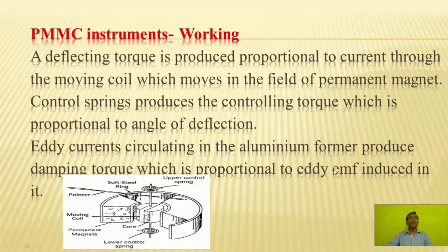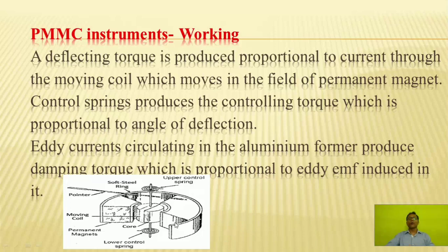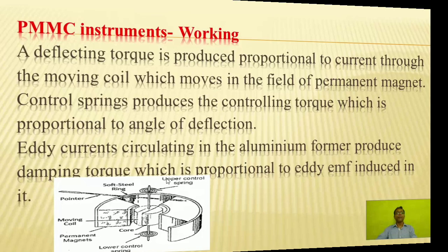We will now see the working of PMMC instruments. A deflecting torque is produced proportional to the current through the moving coil, which moves in the field of the permanent magnet. Control springs produce the controlling torque, which is proportional to the angle of deflection. Eddy currents circulating in the aluminum former produce a damping torque, which is proportional to the EMF induced in it.